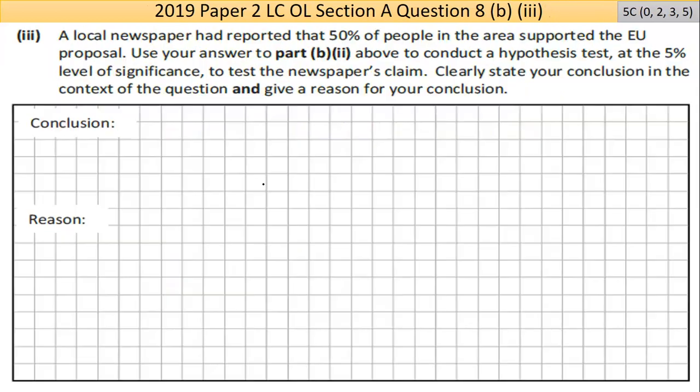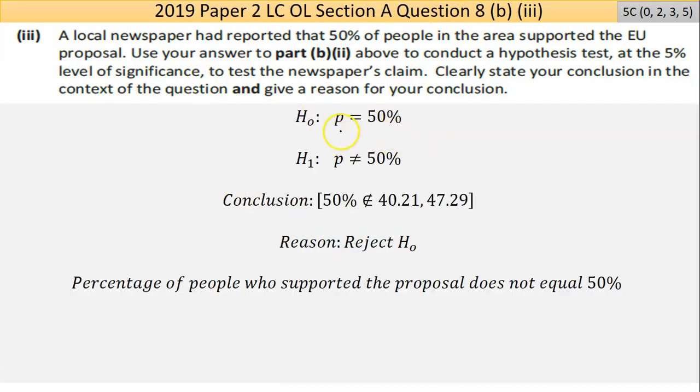Part 3: A local newspaper had reported that 50% of people in the area supported the EU proposal. Use your answer to Part B2 to conduct a hypothesis test at the 5% level of significance to test the newspaper's claim. Clearly state your conclusion in the context of the question and give a reason. We need to come up with the null hypothesis and the alternative hypothesis. That's what the hypothesis test is.